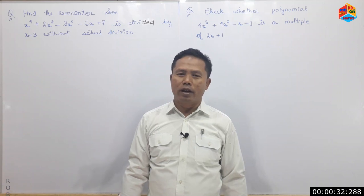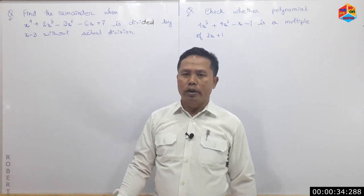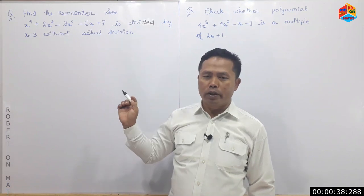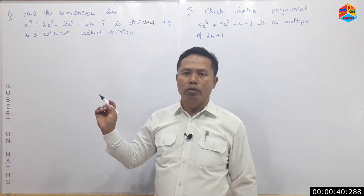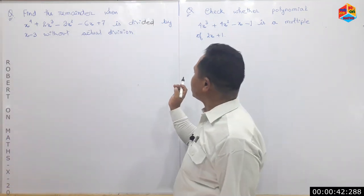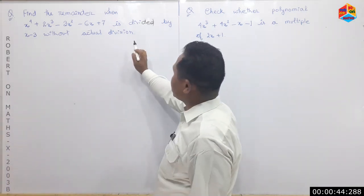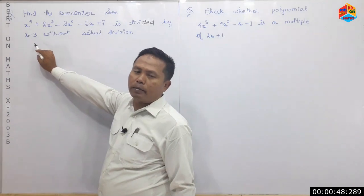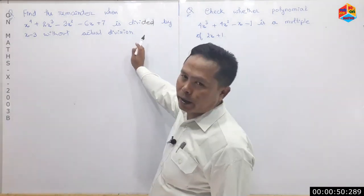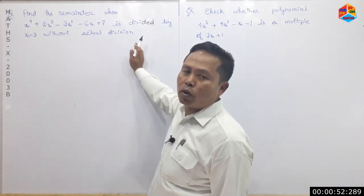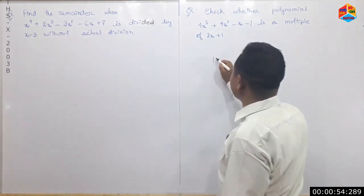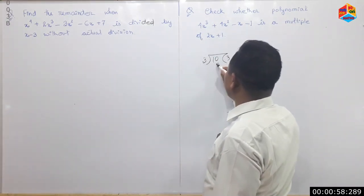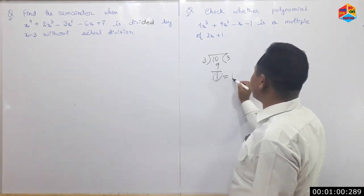I am not sure how to use polynomials. The polynomials are divided by the remainder of the polynomials. The remainder of the polynomials are divided by 3, 9, 1. This remainder will be equal to 10.